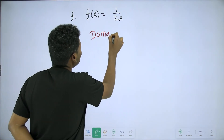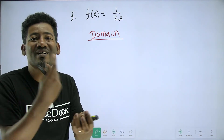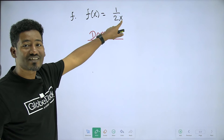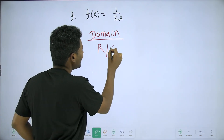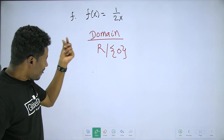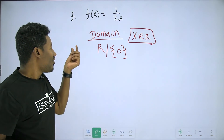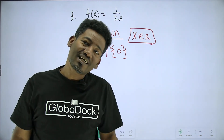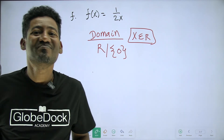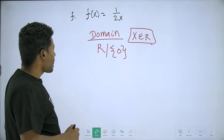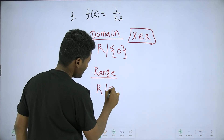Domain. The domain value: if x is equal to zero, then 1 over 2x — 1 over zero is undefined. So the domain is all real numbers except 0.